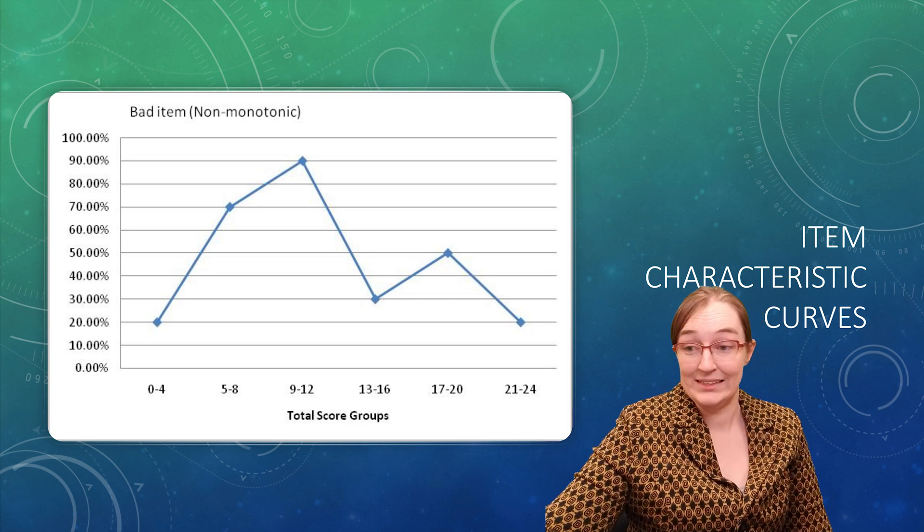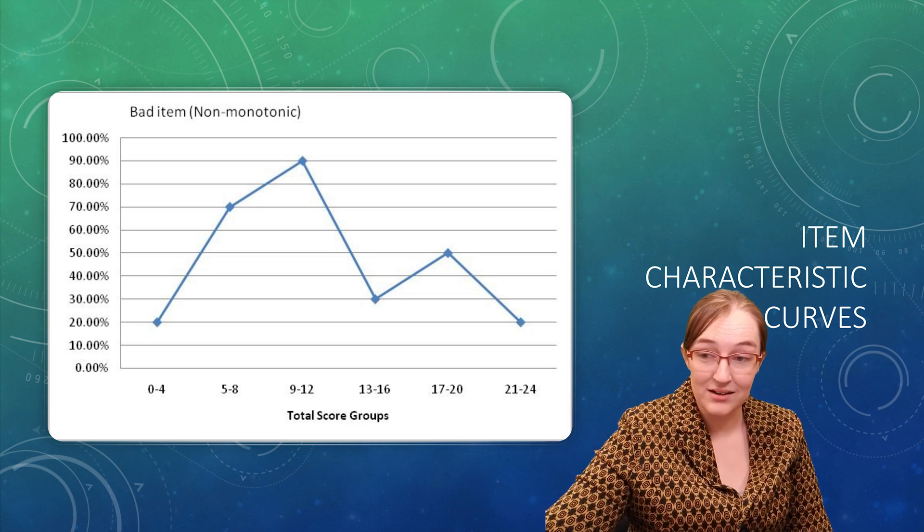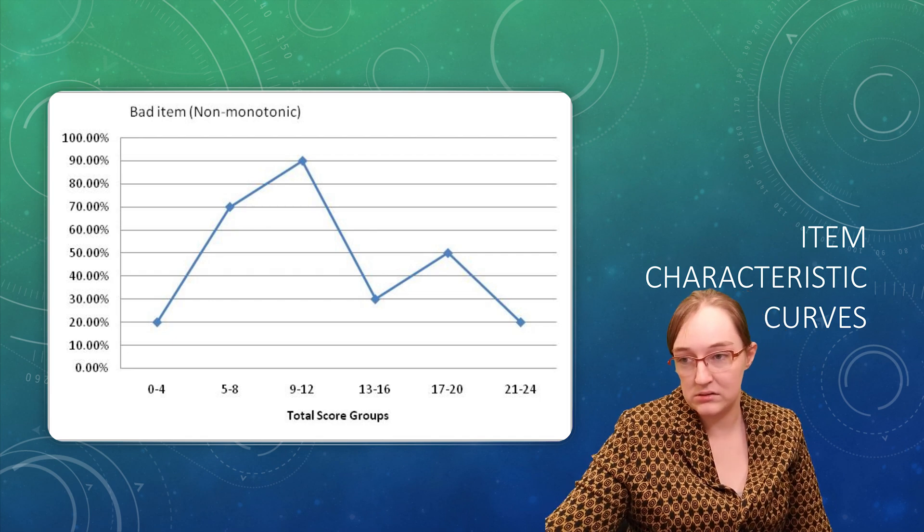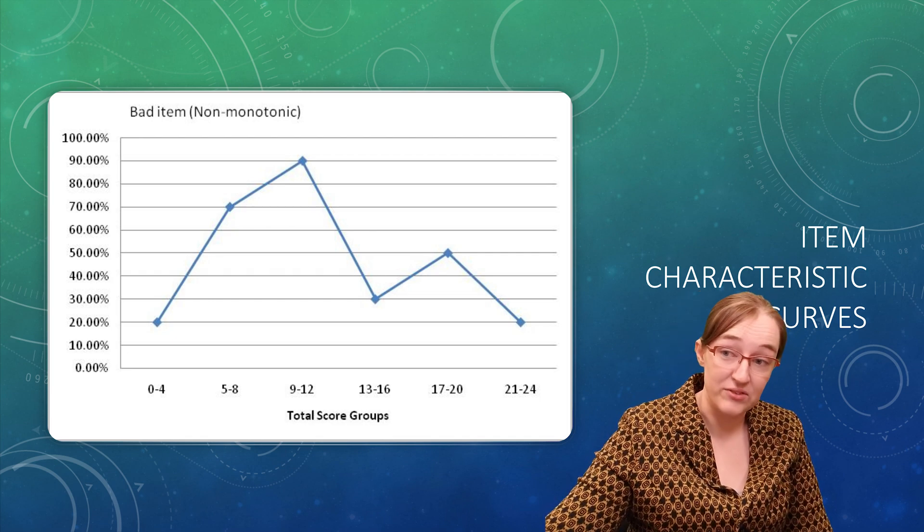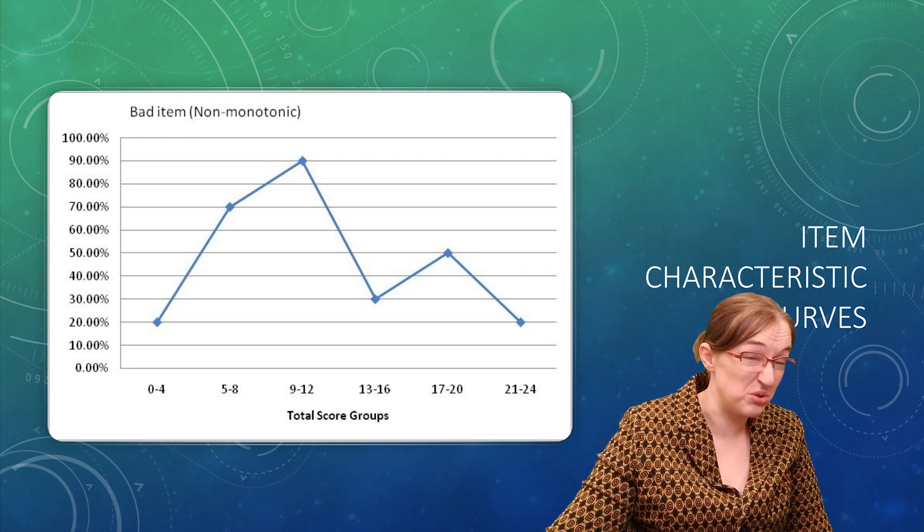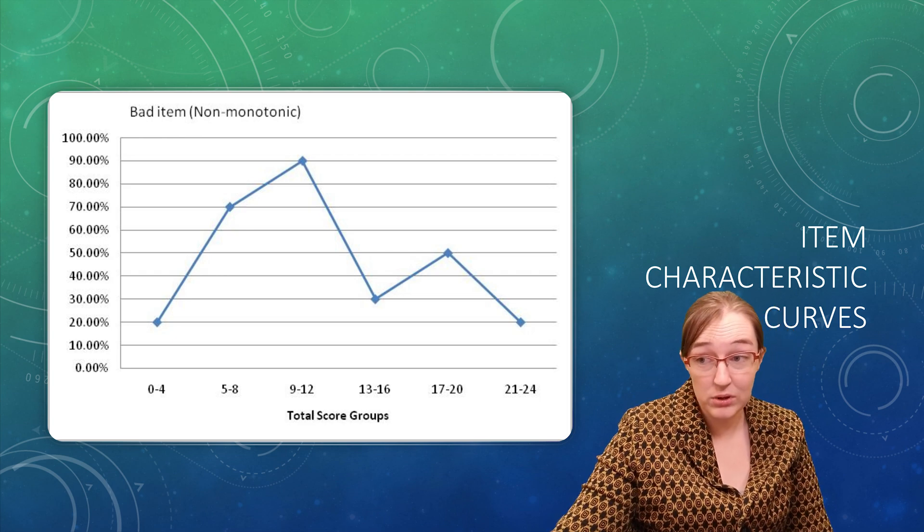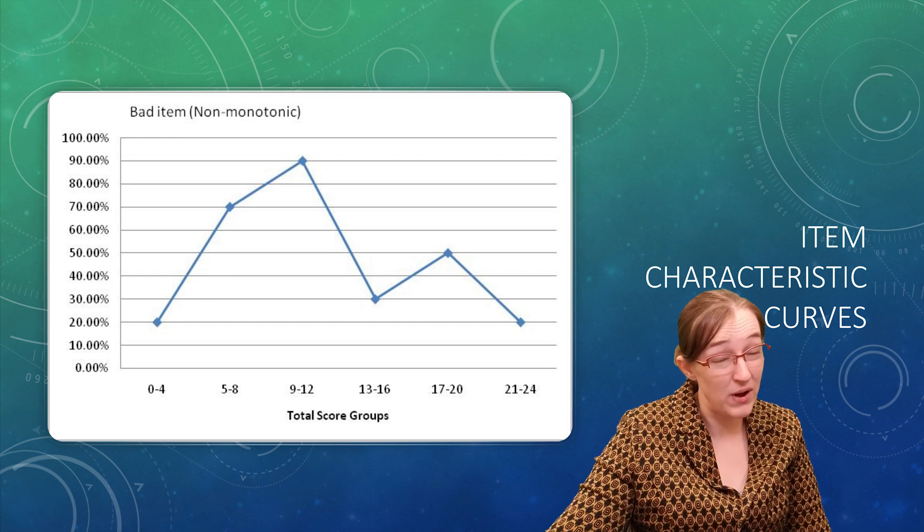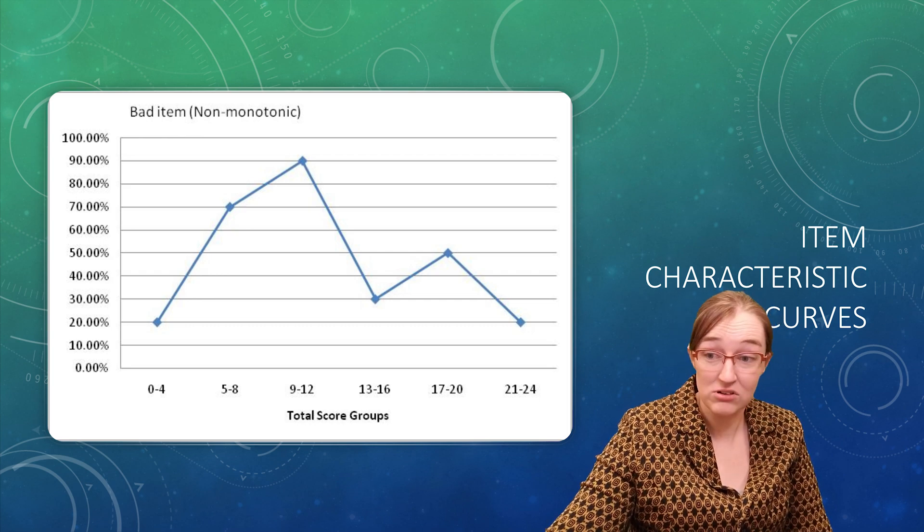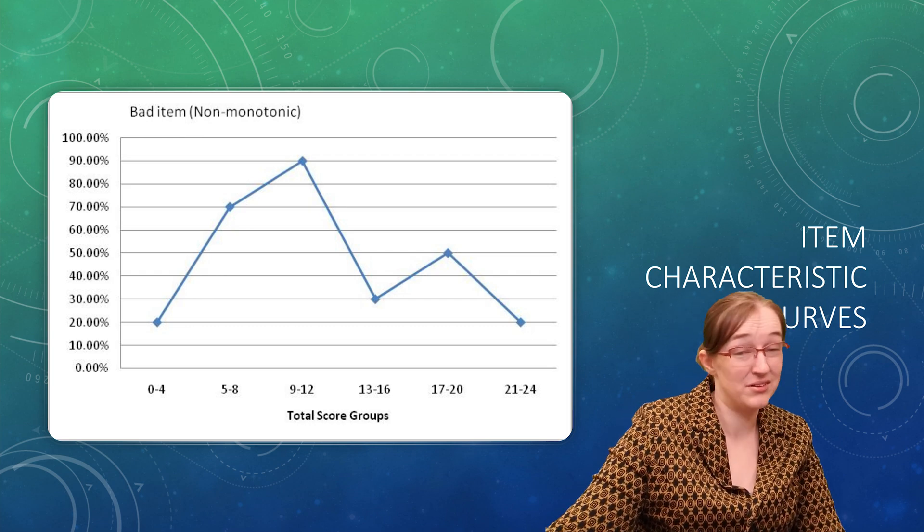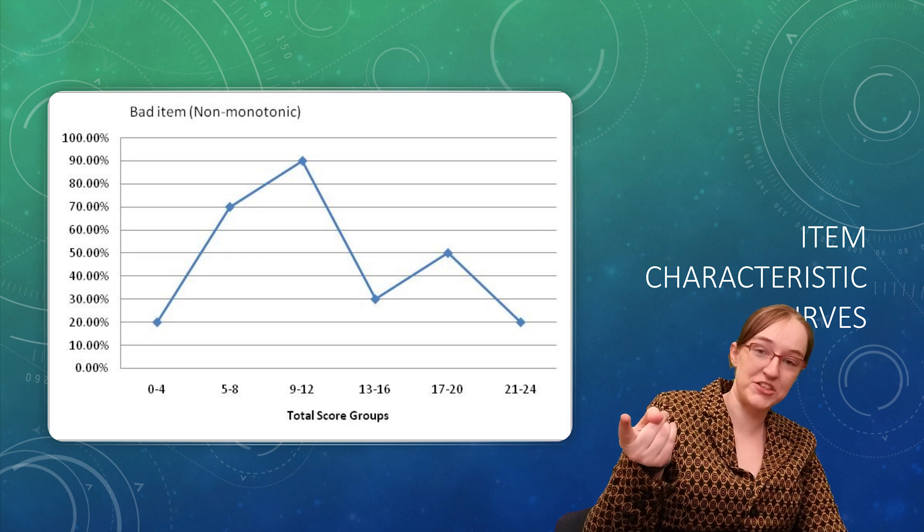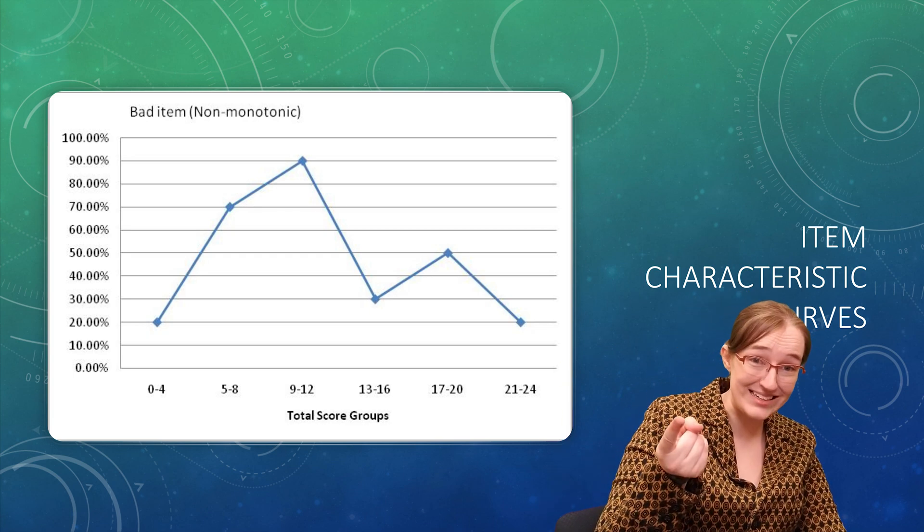Here's another one. This is even worse. Here, if you know nothing, your base rate is about chance level. But if you had a total score in the middle of the pack, 90% of these folks got this question right. While if you did well on this test in general, you were predicted to not do well on this individual question. That's a problem.